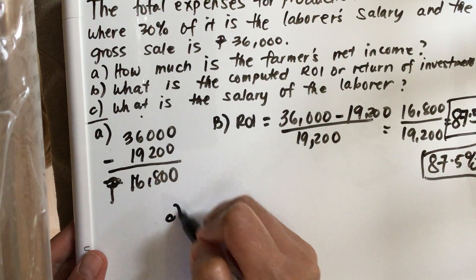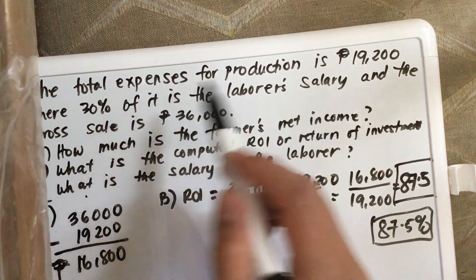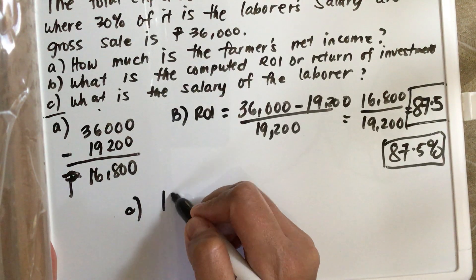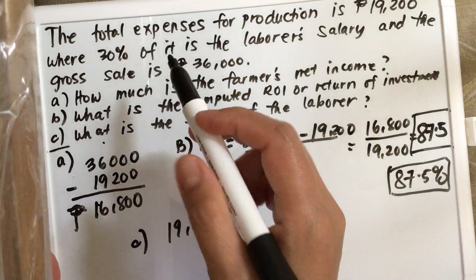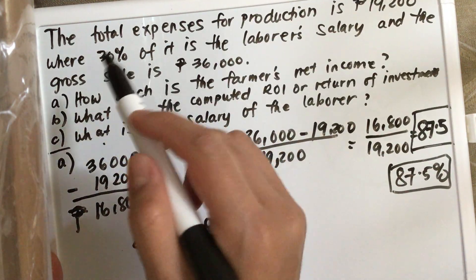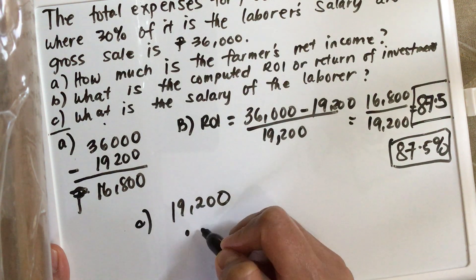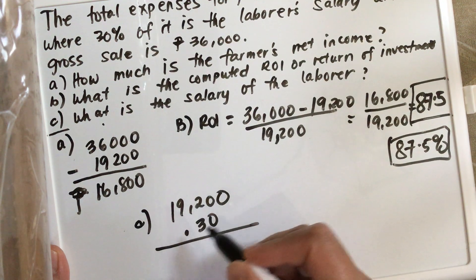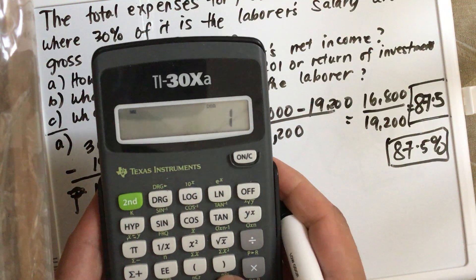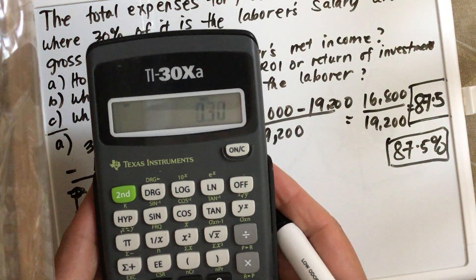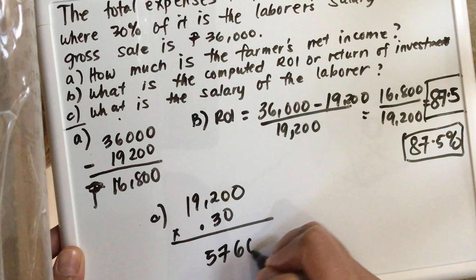Now for C — what is the salary of the laborer? The expenses is 19,200, and 30% of it is the laborer's salary. So we multiply 19,200 times 0.30, which is equal to 5,760 pesos.